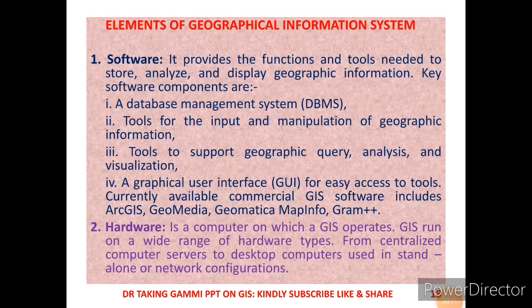Let us discuss the elements of the Geographical Information System. First, we need software. It provides the functions and tools needed to store, analyze, and display geographic information. Key software components are: one, a database management system; two, tools for input and manipulation of geographic information; three, tools to support geographic query, analysis, and visualization; four, a graphical user interface (GUI). Currently available commercial software includes ArcGIS, GeoMedia, and others.